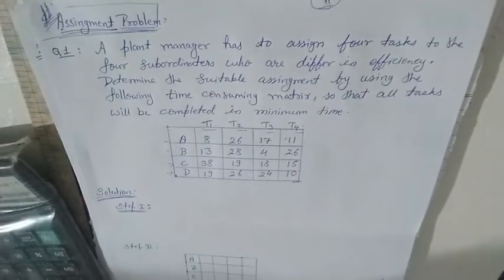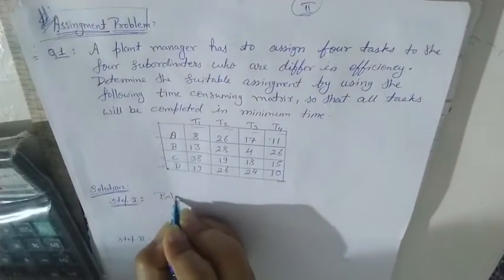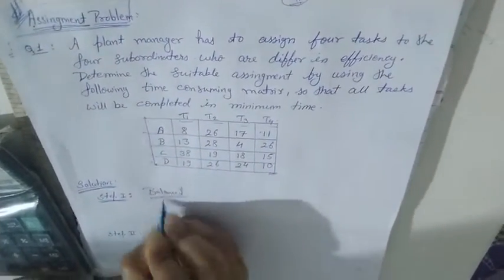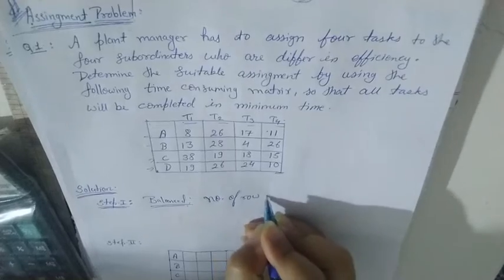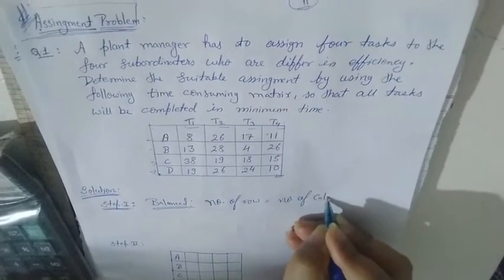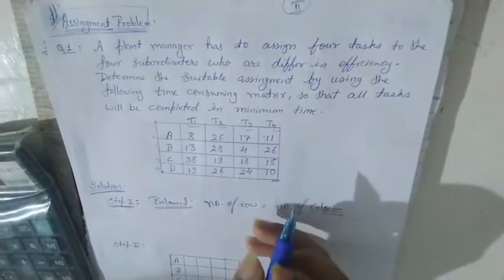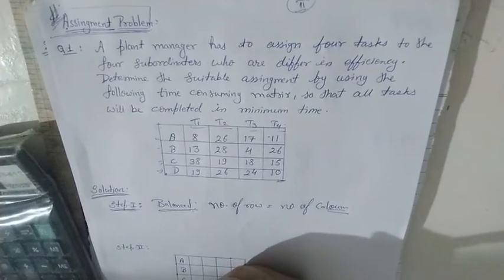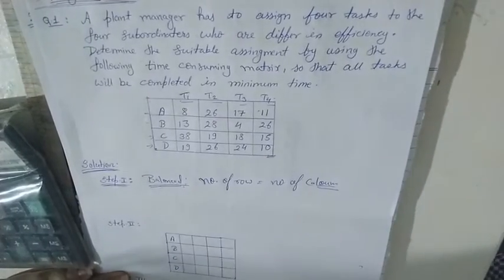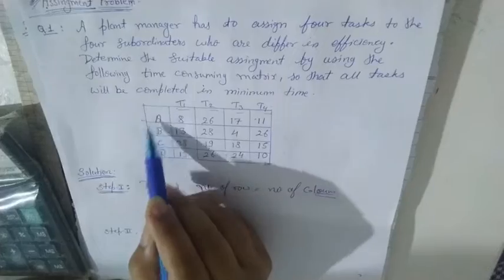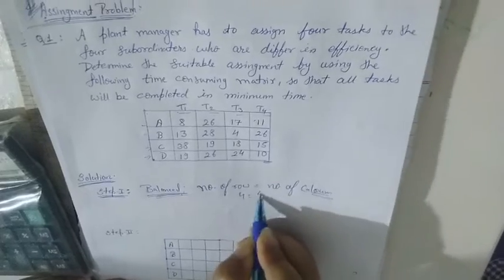The first step is to check whether the problem is balanced or unbalanced. To check balance, the number of rows should be equal to the number of columns. Here we see there are 4 rows, 4 columns, and 4 tasks — that means the problem is balanced. 4 equals 4.